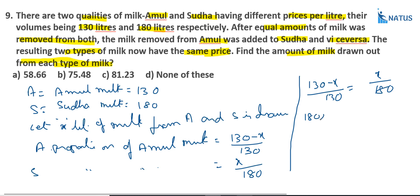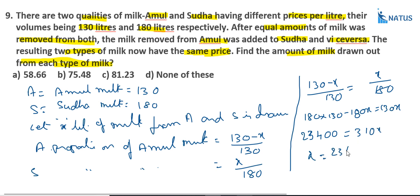Solving: 180(130 − x) = 130x, so 23400 − 180x = 130x, giving 310x = 23400, so x = 23400/310 ≈ 75.48 liters. Option B is the correct answer.